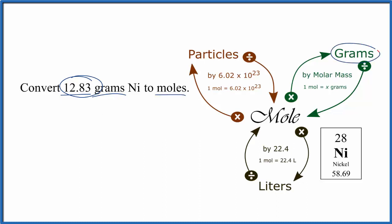When we're going from grams to moles we're going to divide by the molar mass. The molar mass in this case is the atomic mass because it's just nickel by itself. Nickel on the periodic table is 58.63 grams per mole.